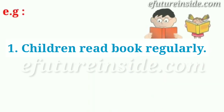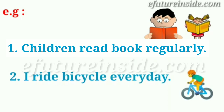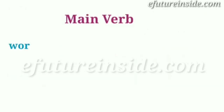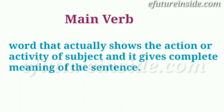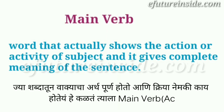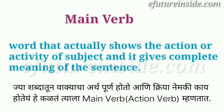Let's see some more examples: 'Children read books regularly.' In short, main verb means the word that actually shows the action or activity of the subject, and it gives complete meaning to the sentence. The word through which the meaning of the sentence becomes complete and which shows what action is being done — that is called the main verb.